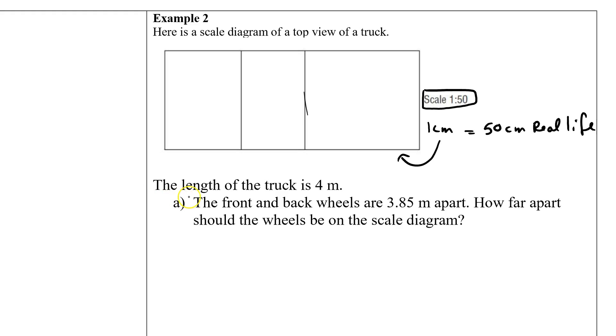So the length of the truck is 4 meters. So on the scale diagram, in real life, this length right here would be 4 meters. The front and back wheels are 3.85 meters apart. How far apart should the wheels be on the scale diagram?